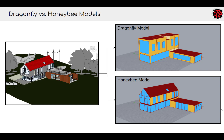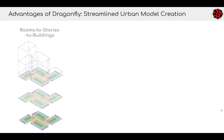So why would we want to build a Dragonfly model as opposed to a Honeybee model? The first advantage is several streamlined workflows for urban model creation. You can create Dragonfly models by creating individual room 2Ds, putting them together into stories, and then putting those stories together into buildings. This gives you the most control over how your individual Dragonfly buildings are zoned and what individual spaces exist within that building.